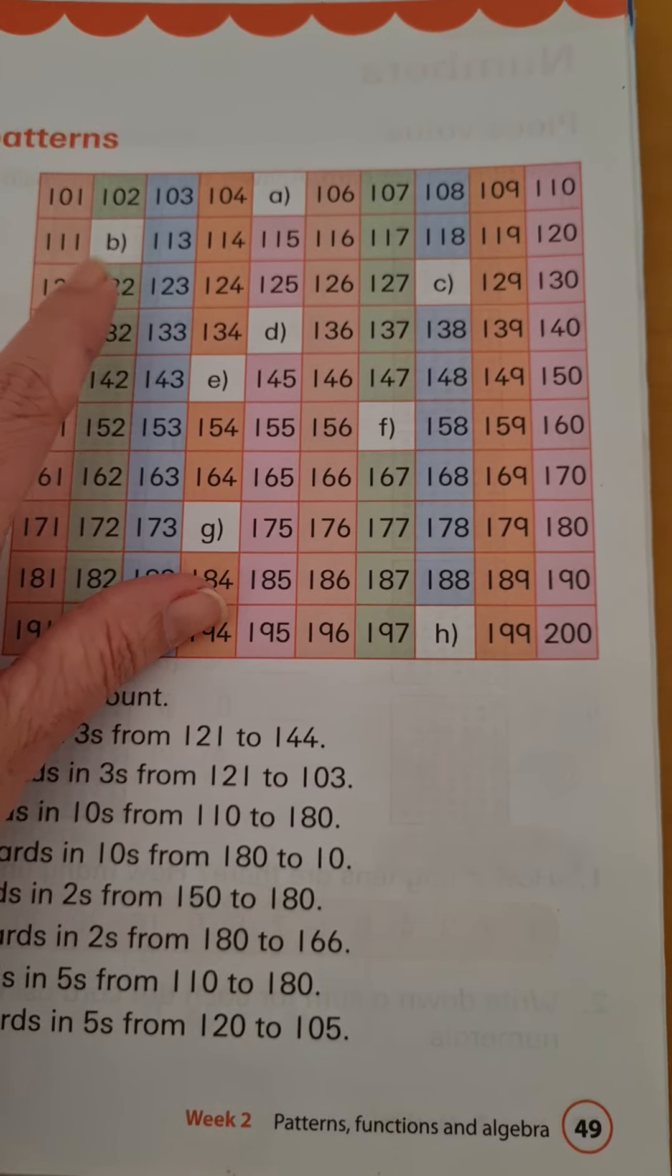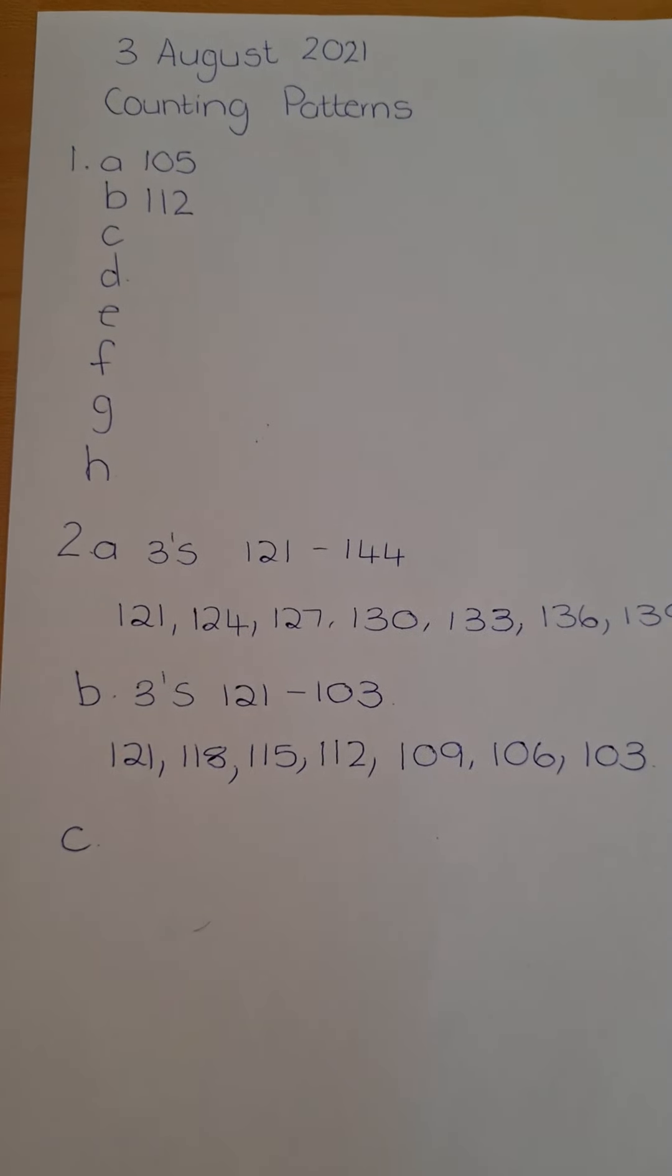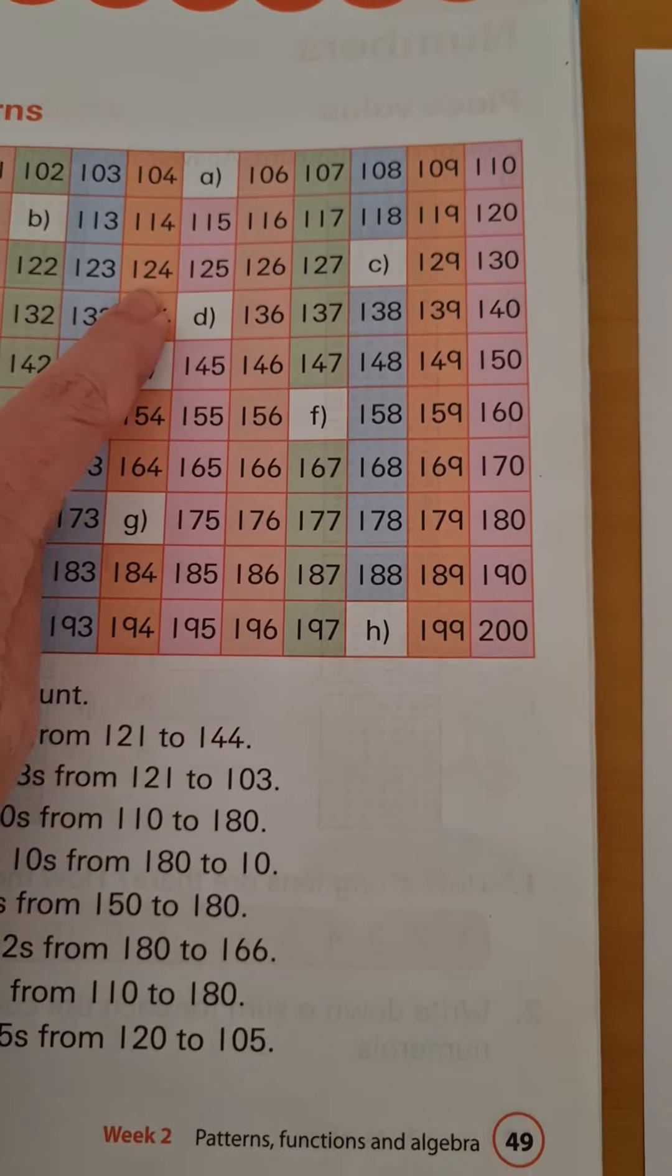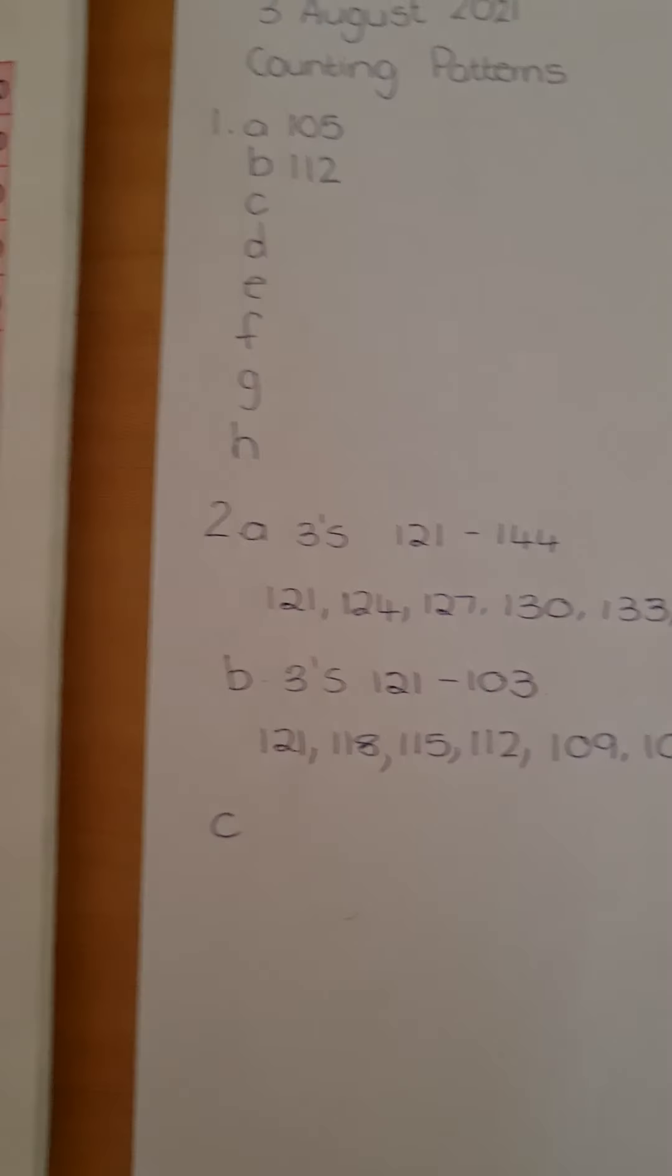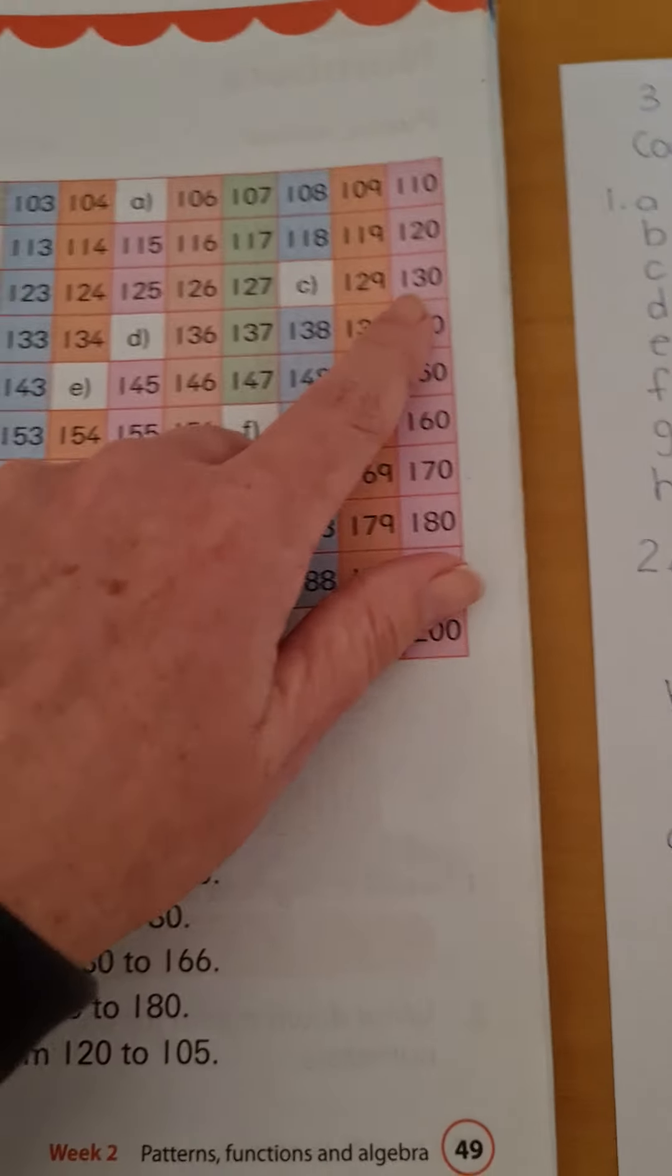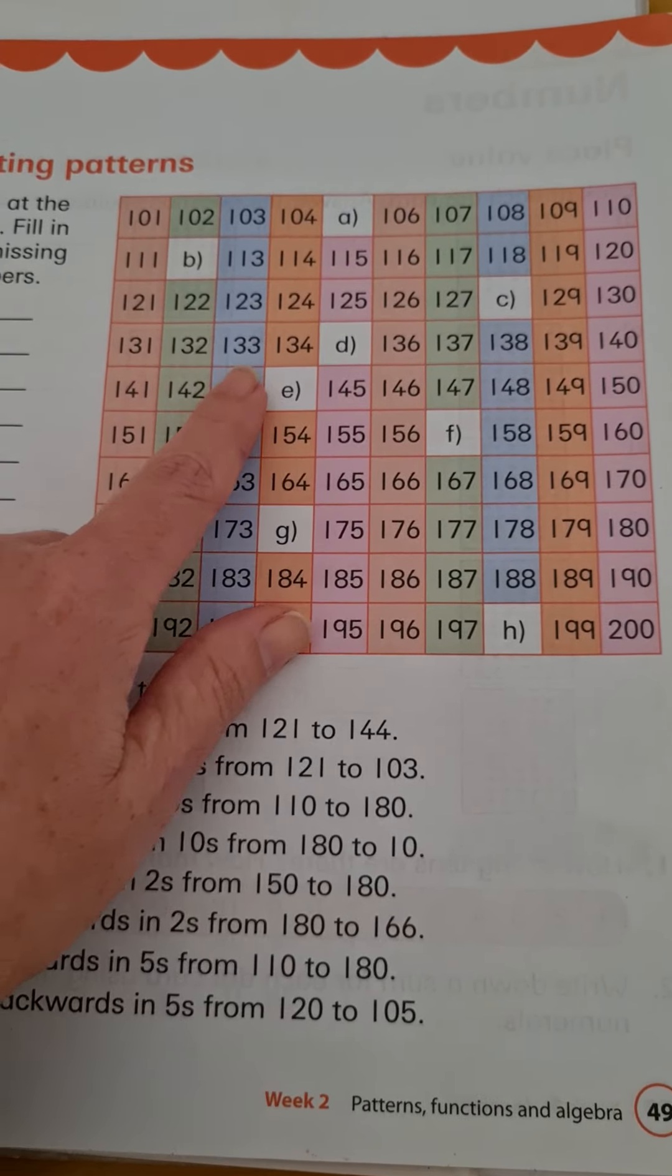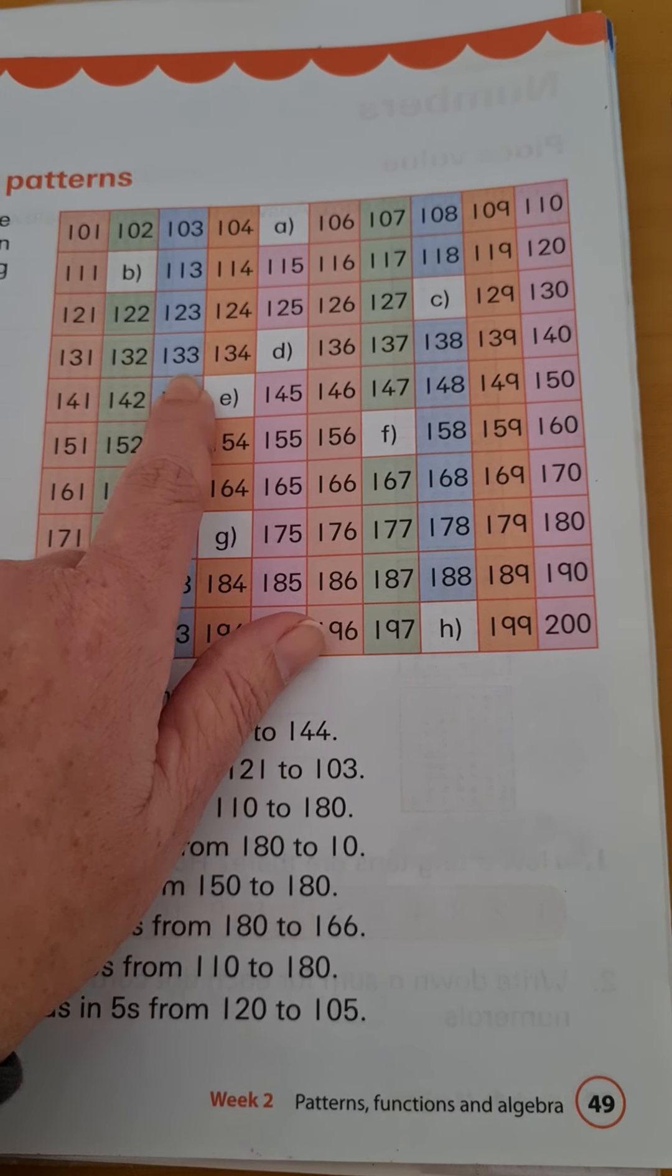Then you will count three more: one, two, three—124, and you write it down. Next you're going to count three more: one, two, three—127. And I wrote it down, 127. Three more: one, two, three—130. Write it down. Three more than 130: one, two, three—133. Keep adding three and writing down the numbers: 136, 139.